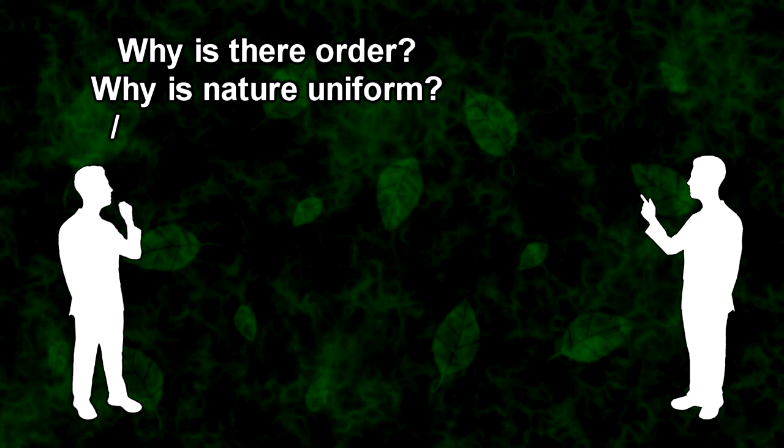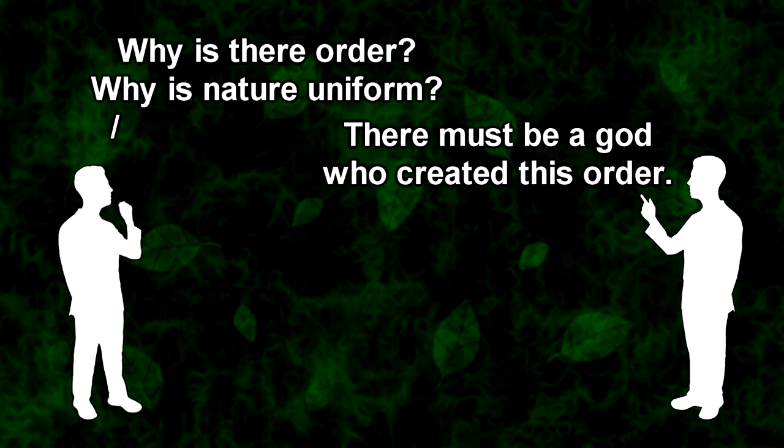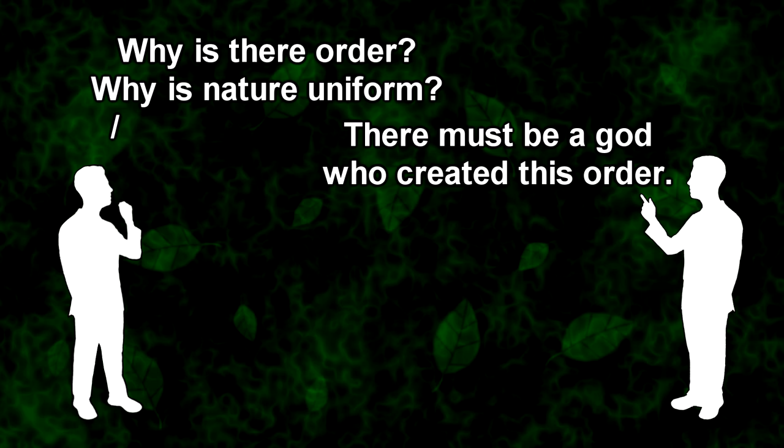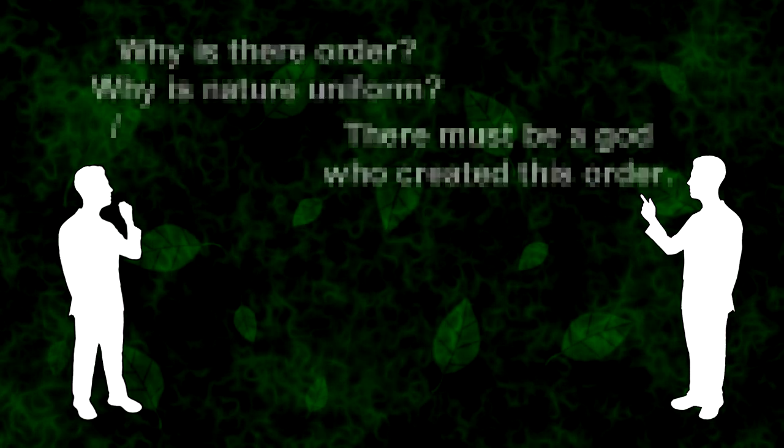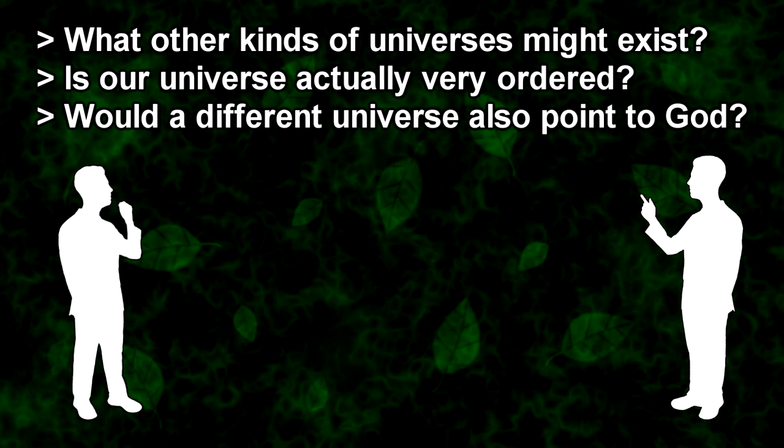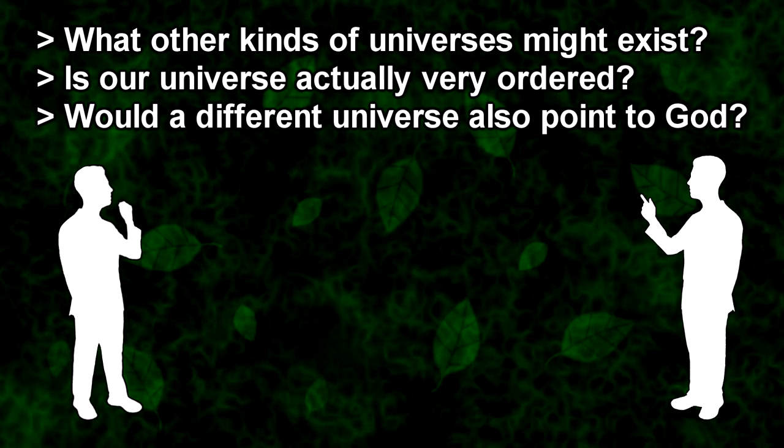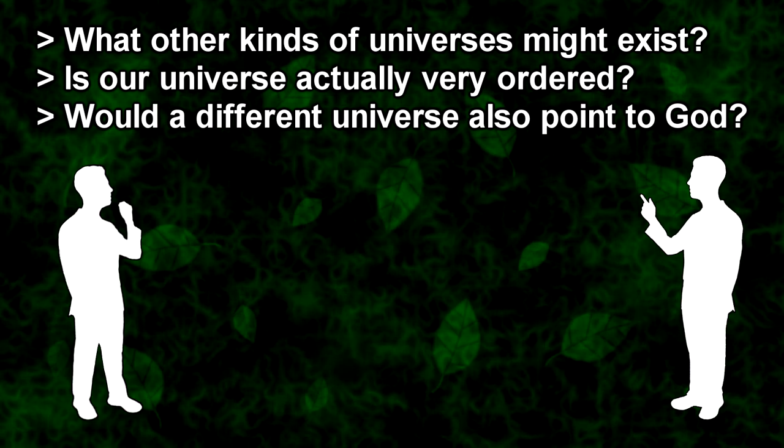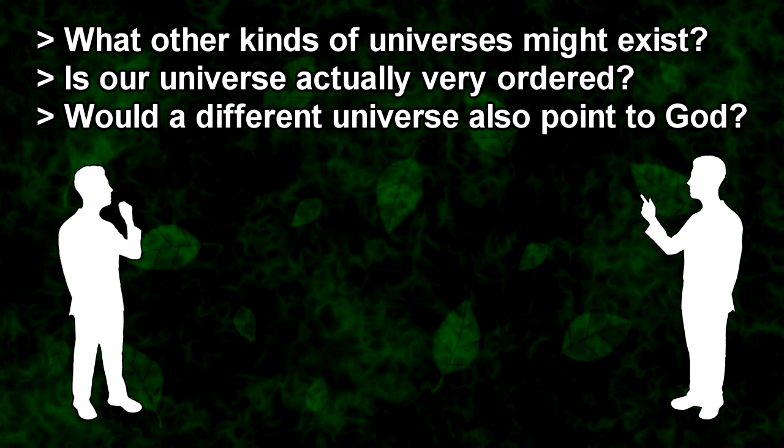Using inference to the best explanation, the argument goes, there must be a God who created this order. Like many arguments for God, the argument from order is intuitively compelling, but it crumbles as soon as you consider the assumptions it's built on. For example, what other kinds of universes might exist, and what would we think about them? Is our universe actually very ordered in the first place? And would a different universe also be explainable by a God? Let's examine each of these questions.